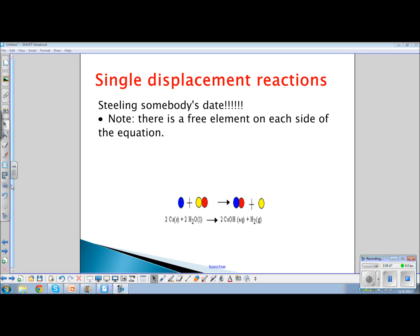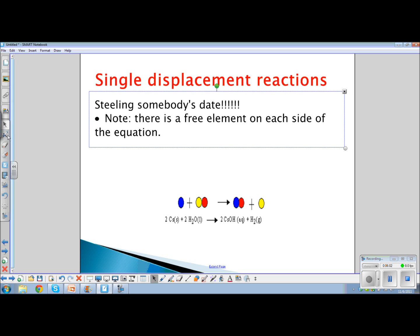The next type of reaction is a single displacement reaction or single replacement reaction. Stealing someone's date. Now you won't forget because this is supposed to be stealing with an A. The way that you tell this reaction is that there's a free element on each side of the equation. Notice that there's a single circle on both sides of the reaction.